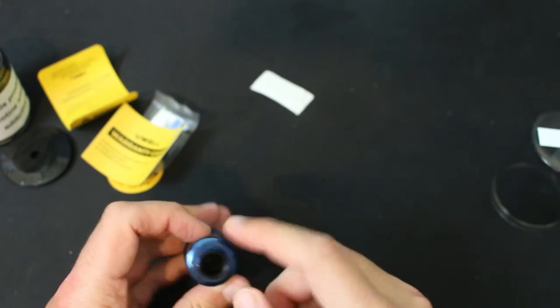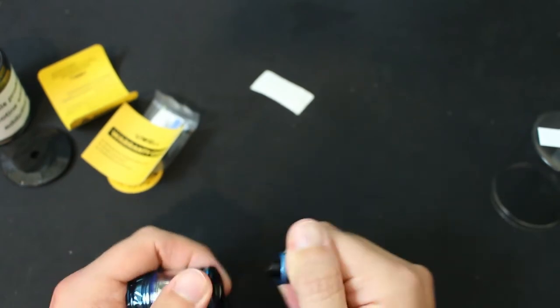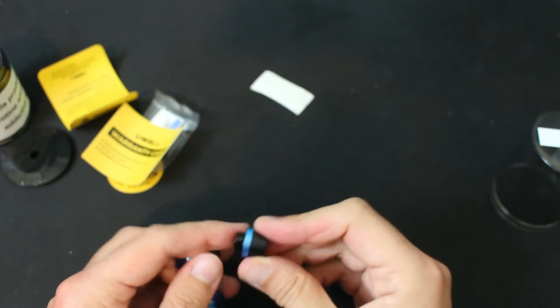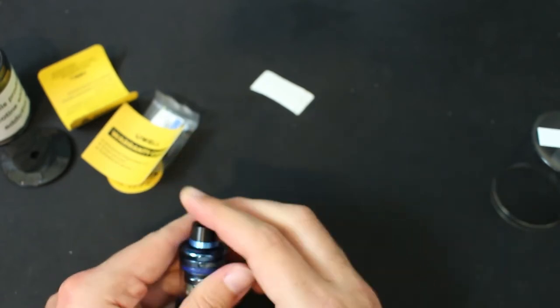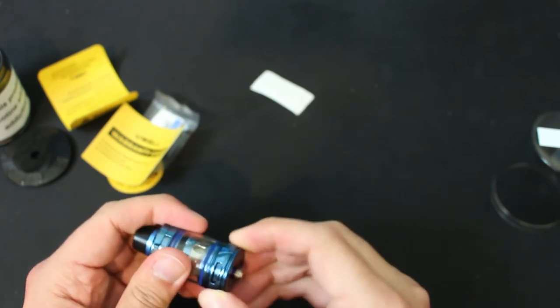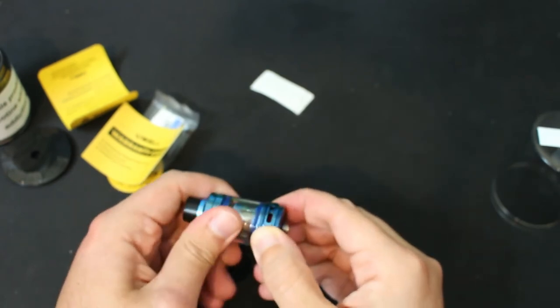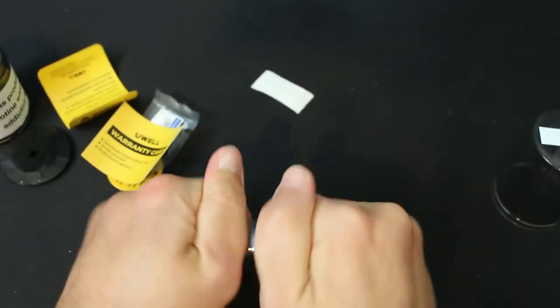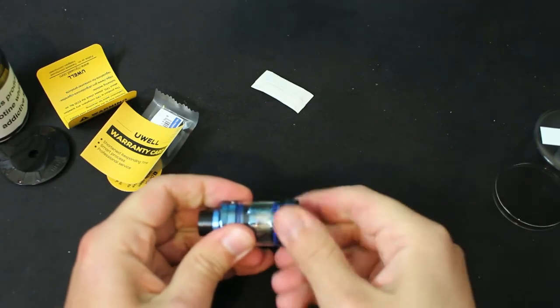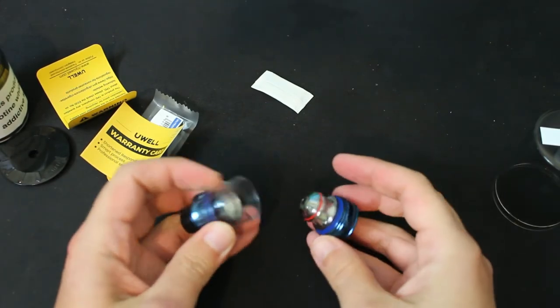Either way, you got your mouthpiece here, which is a 510 wide bore. You can just slap it on here. You got your airflow here at the bottom, not stiff or anything. And you got your coil. This coil, to open it, you just unscrew the bottom. There you go.